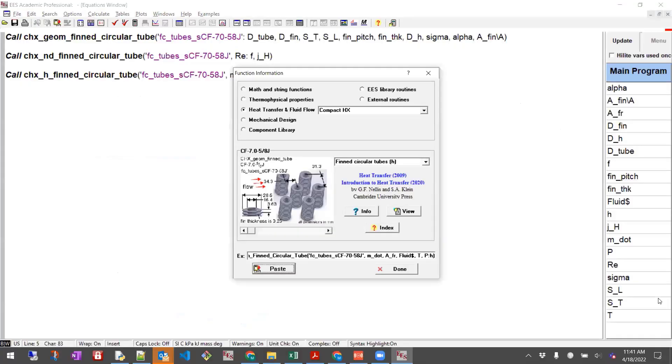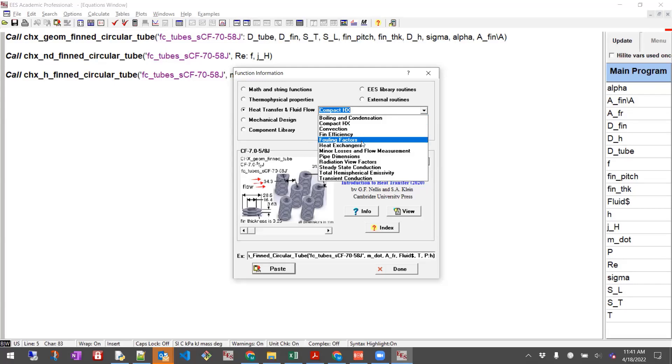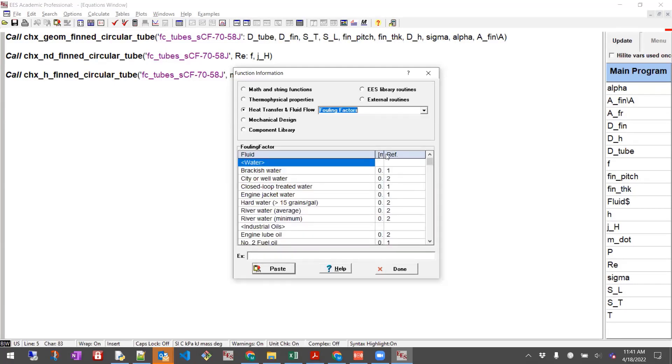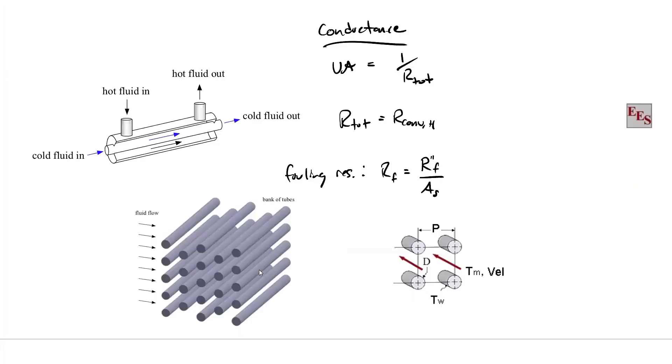So we have our fouling resistance. That's defined as R sub F is normally given to us as R double prime F, and then we divide that by the surface area that's available. R double prime F is something we can go look up and use usually. If I look in my library here, there's a dropdown that says fouling factors. I could go into this table. It's not formatted very well, but I could say is my fluid water? My fluid's water and it's brackish water, city well water, river water, whatever. I can come in here and I can paste this thing in. That's going to return for me a small number, usually like one e to the minus four or something like that.